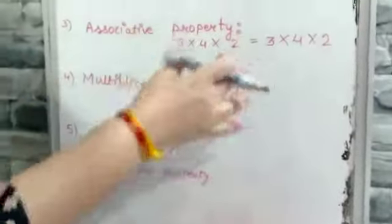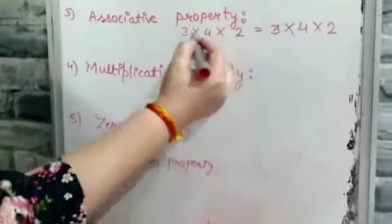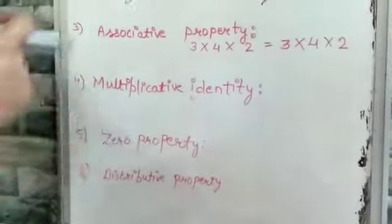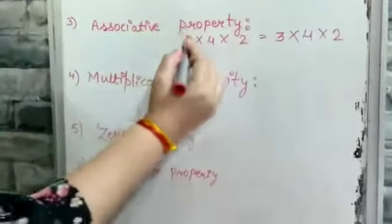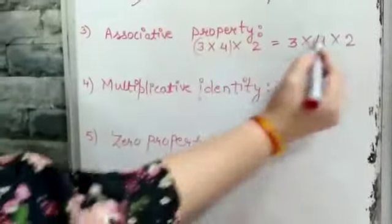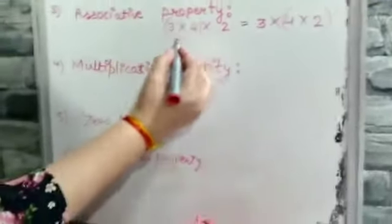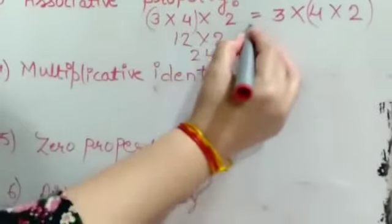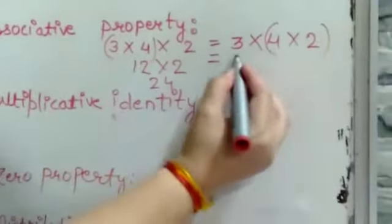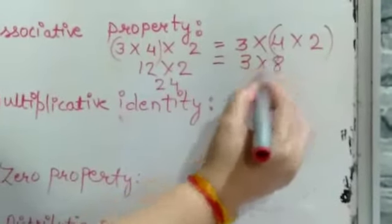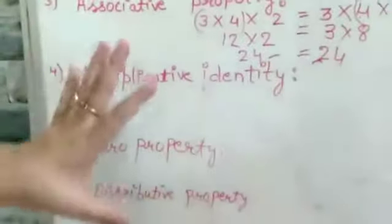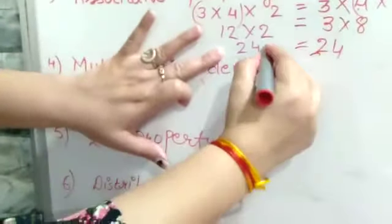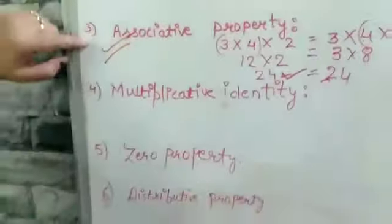The third property, associative property, says that if there are more than two numbers — say 3 or 4 numbers — like I have taken 3 multiplied by 4 multiplied by 2. If there are three or more numbers, we take any two first. Here I have taken 3 and 4 first: 3 times 4 is 12, then 12 times 2 is 24. On the other side, taking 4 and 2 first: 4 times 2 is 8, and 8 times 3 is 24. In either way, the product at the end is the same. So associative property is true for multiplication.